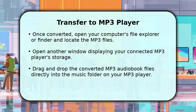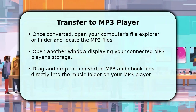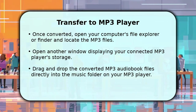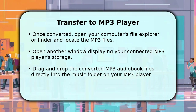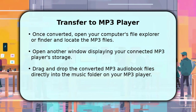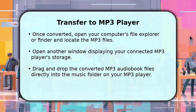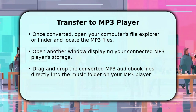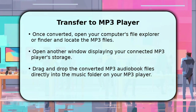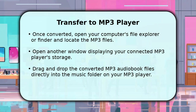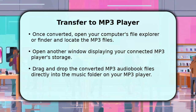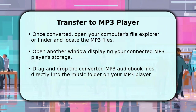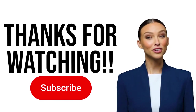After successful conversion, find your new MP3 audiobook files on your computer. They are usually in the same output folder you designated earlier. Open your computer's file explorer or finder and navigate to your connected MP3 player — it often appears as a removable disk drive. Then, simply drag and drop the converted audiobook files into the music or audio folder on your MP3 player. This process typically takes only a few moments.